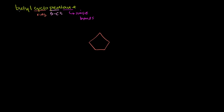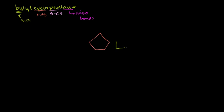Just as a review, the 'but-' prefix refers to four carbons — methyl, ethyl, propyl, butyl. This is a four-carbon alkyl group. So we can pick any of the carbons around the cyclopentane ring and add four carbons: one, two, three, four. That is the butyl part of this whole thing.